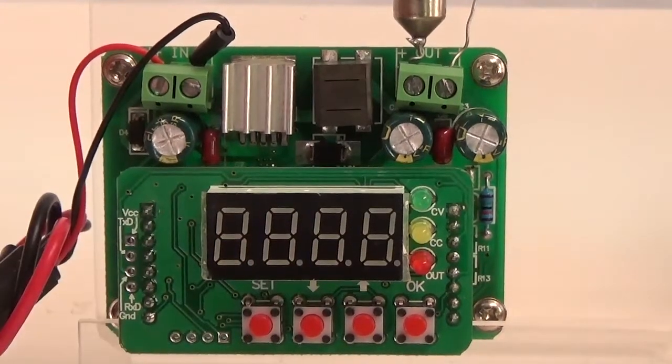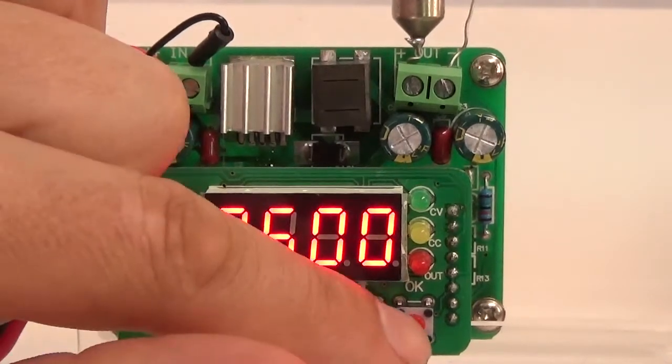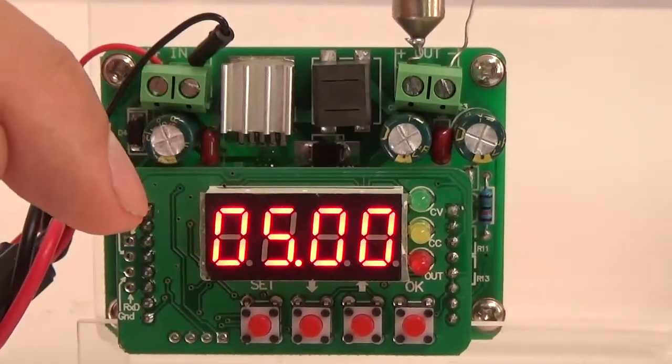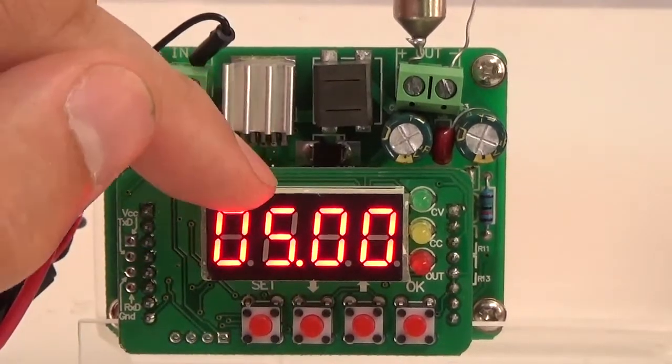If I take the power off and reconnect the power, you can see that the output is inactive. I have to press OK to enable the output. If I want to toggle that, I need to set the function 0 to yes.